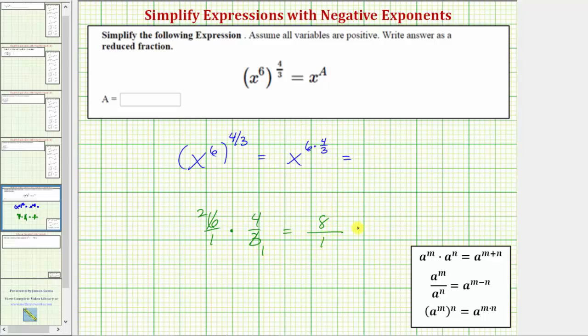Eight divided by one, or eight ones, equals eight. Which means the expression simplifies to x raised to the power of eight, or x to the eighth.